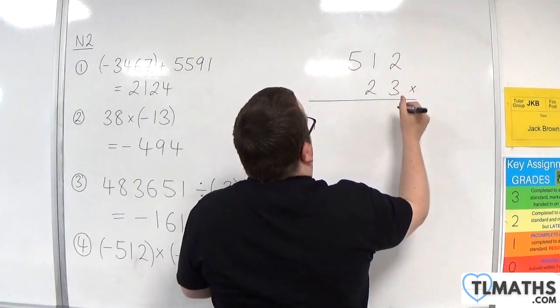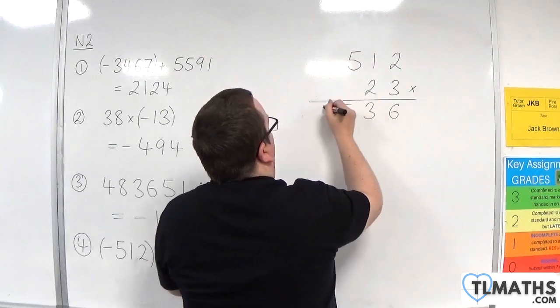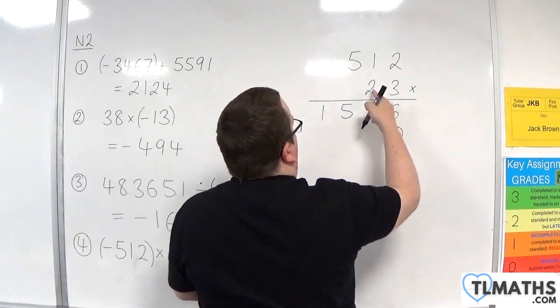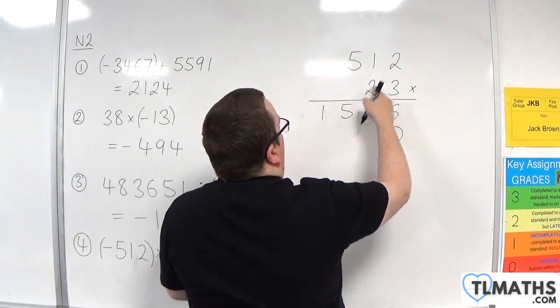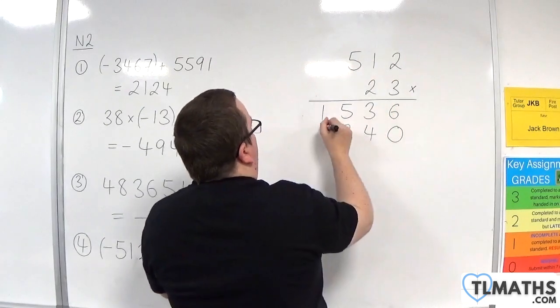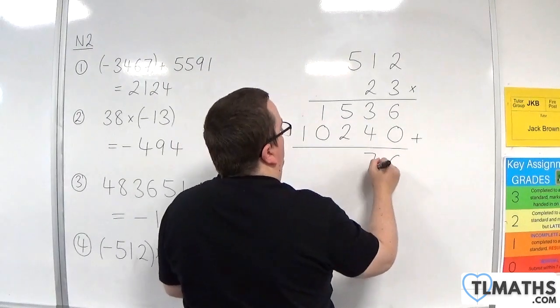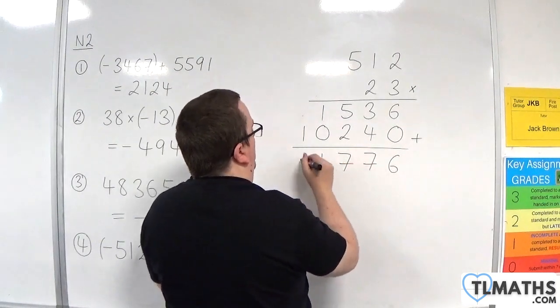3 times 2 is 6. 3 times 1 is 3. 3 times 5 is 15. Now put in a 0 because we're now multiplying by 20. 2, 2 is 4. 2 times 1 is 2. 2 times 5 is 10. Add those two results together. We'll get 6, 7, 7, 1, 1.